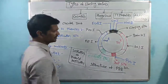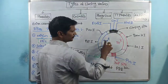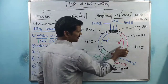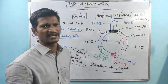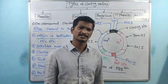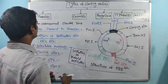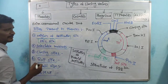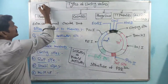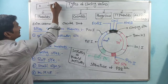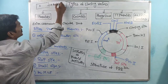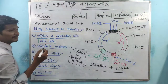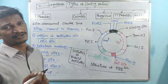Next are selectable markers. Within PBR 322, there are two selectable markers — one is the ampicillin resistance gene and the other is the tetracycline resistance gene. Bacteria having R-plasmids with antibiotic resistant genes can survive in the presence of antibiotics.